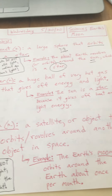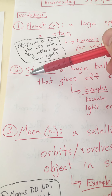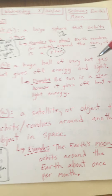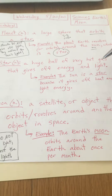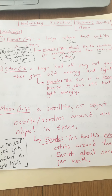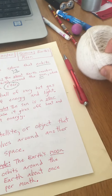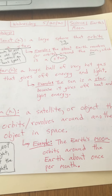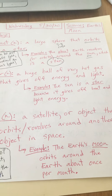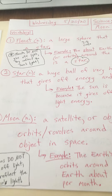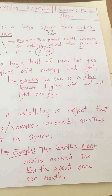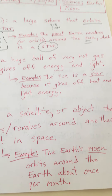Let's find out what a star is and why the sun matches the definition. Star is a noun — it's a thing. A star is a huge ball of very hot gas that gives off energy and light. The sun up in the sky is a giant ball of very, very hot gas. This is going to represent our star today, which is our sun. It gives off energy, heat, and light energy as well. The sun is a star because it gives off heat and light energy.